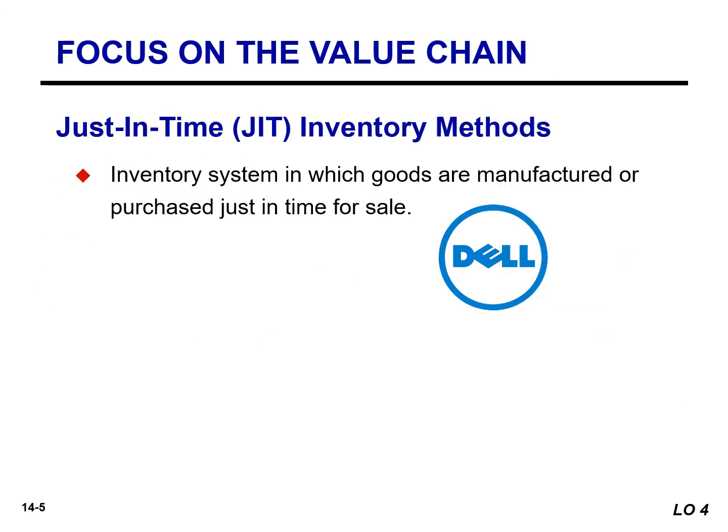Under a just-in-time inventory method, goods are manufactured or purchased just-in-time for sale. For example, Dell can produce and deliver a custom computer within 48 hours of a customer's order. Just-in-time requires emphasis on product quality because companies do not have excess inventory on hand.